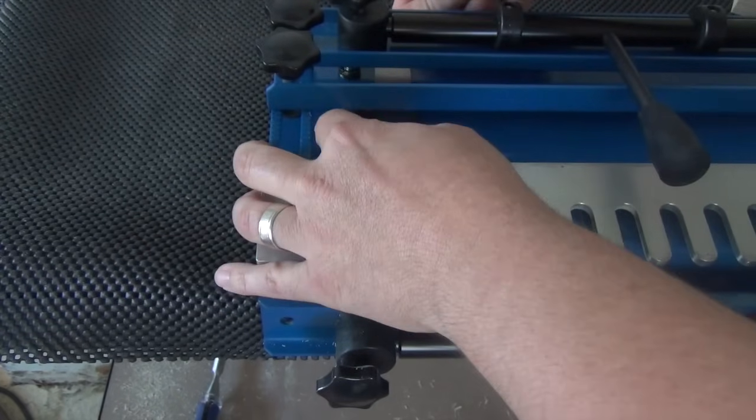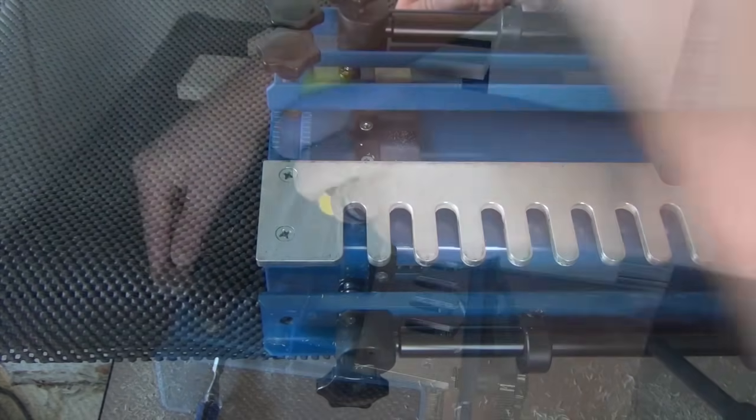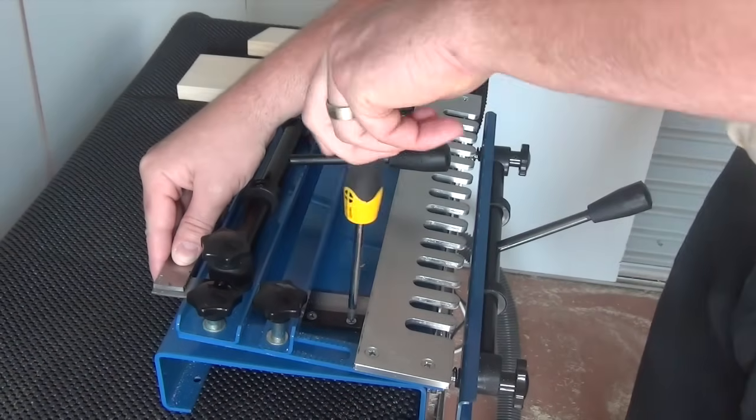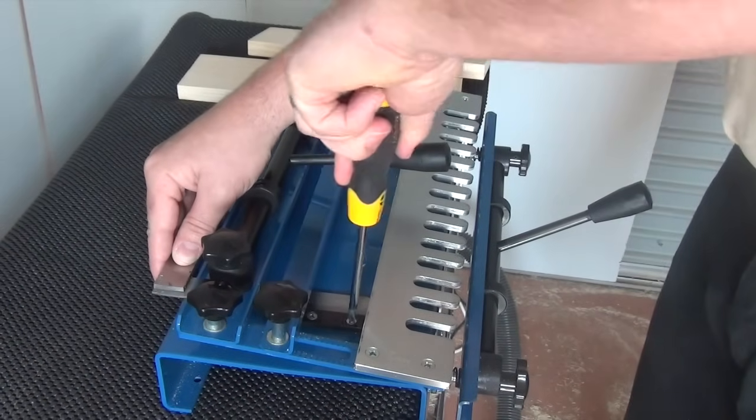Get a try square and set it flush with the back of the jig and move the side stop so it is square with your try square. Tighten the other clamping screw to lock the side stop into position.